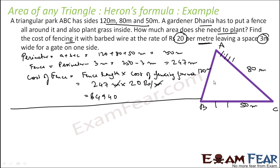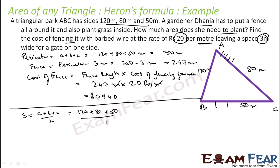Second part: we have to find the area of this triangle. To find the area, we apply Heron's formula. First, find S. S is nothing but (A + B + C) / 2, that is (120 + 80 + 50) / 2 meters, which equals 125 meters.